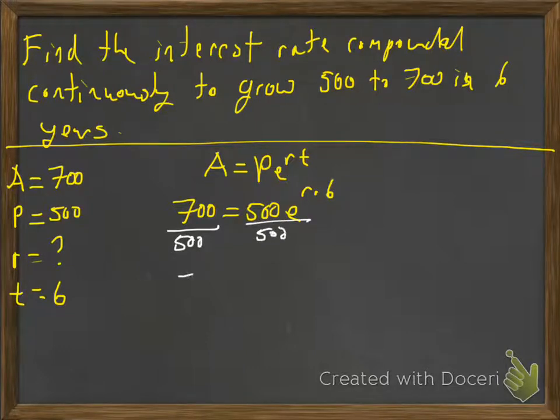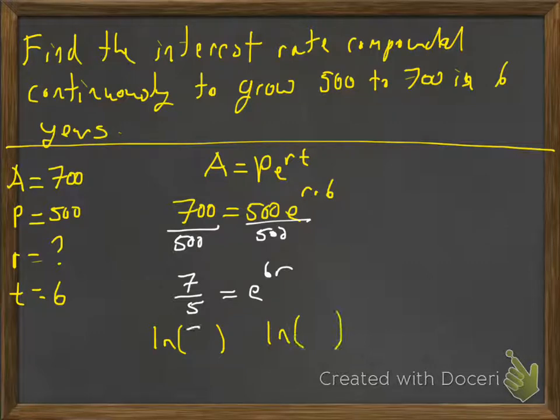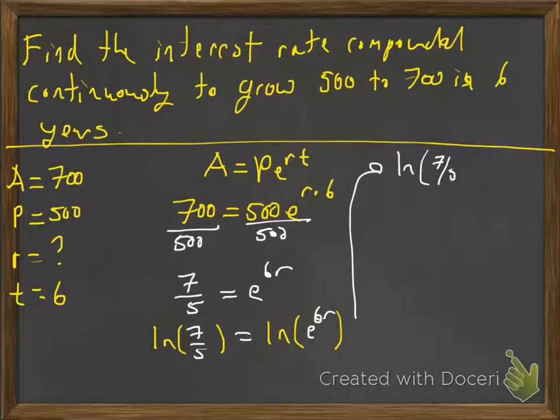And so we're always isolating this exponential, so we're going to divide by 500 to isolate that exponential. So we'll have seven-fifths is equal to e to the 6r or r6. We'll take the natural log of both sides. The natural log is going to undo the whole e for us, which is very nice. All right, so ln of seven-fifths is equal to 6r. Divide both sides by six.